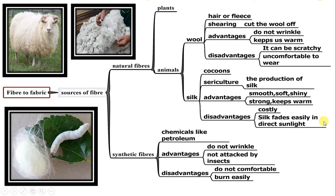Let us now learn about synthetic fibers. Synthetic fibers are made from chemicals like petroleum. Fabrics made from synthetic fibers do not wrinkle and can be either dull or shiny. They are strong, do not absorb water, and are not attacked by insects like moths. These are the advantages of synthetic fibers.